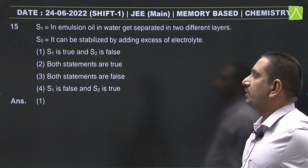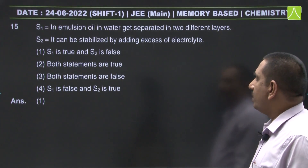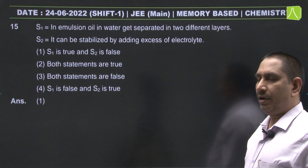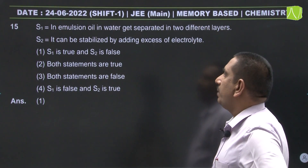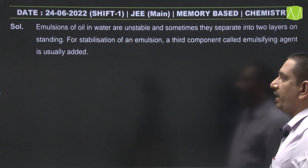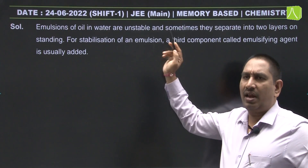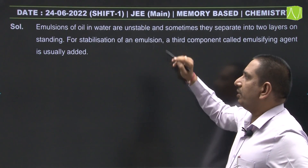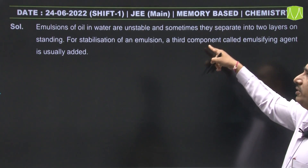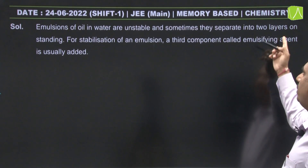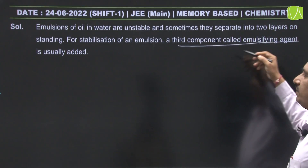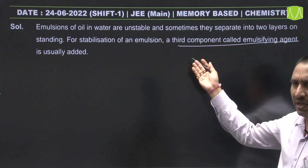Next from surface chemistry: in emulsion, oil in water gets separated into two different layers — yes. It can be stabilized by adding excess electrolyte — no, it is stabilized by adding an emulsifying agent. NCERT states directly: emulsions of oil in water are unstable and sometimes separate into two layers on standing. For stabilization, a third component called an emulsifying agent, such as soap, is added.